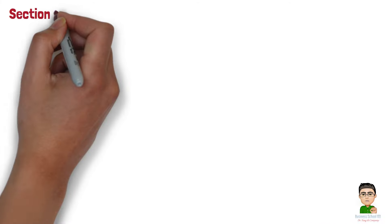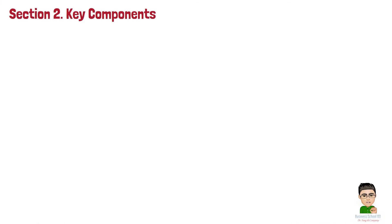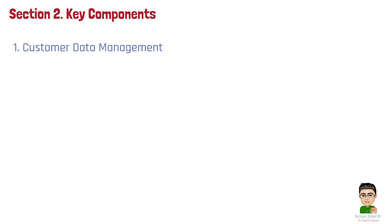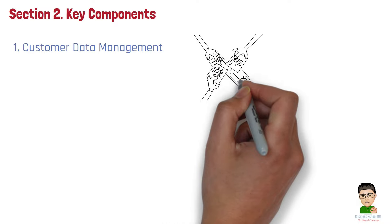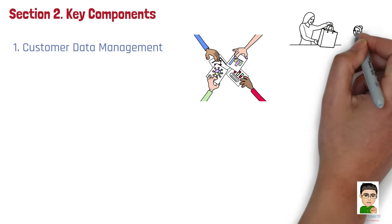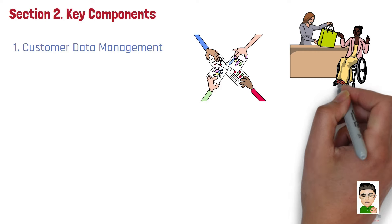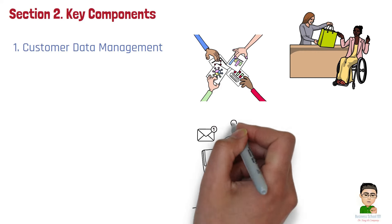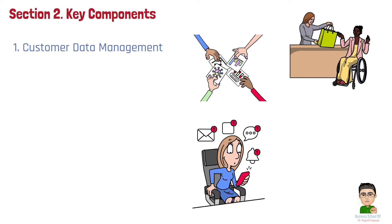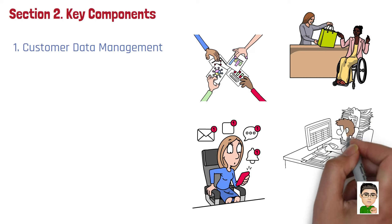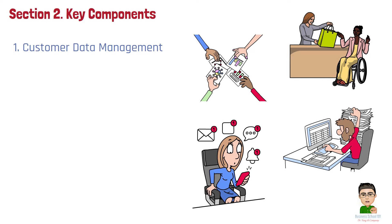Section 2: Key Components. In general, CRM includes the following components. Number 1: Customer Data Management. At the core of CRM is the collection and organization of customer data. CRM systems gather information from various sources, such as sales interactions, customer service inquiries, social media, and website visits. This data is stored in a centralized database, giving managers and teams a complete view of each customer, enabling personalized interactions and informed decision-making.